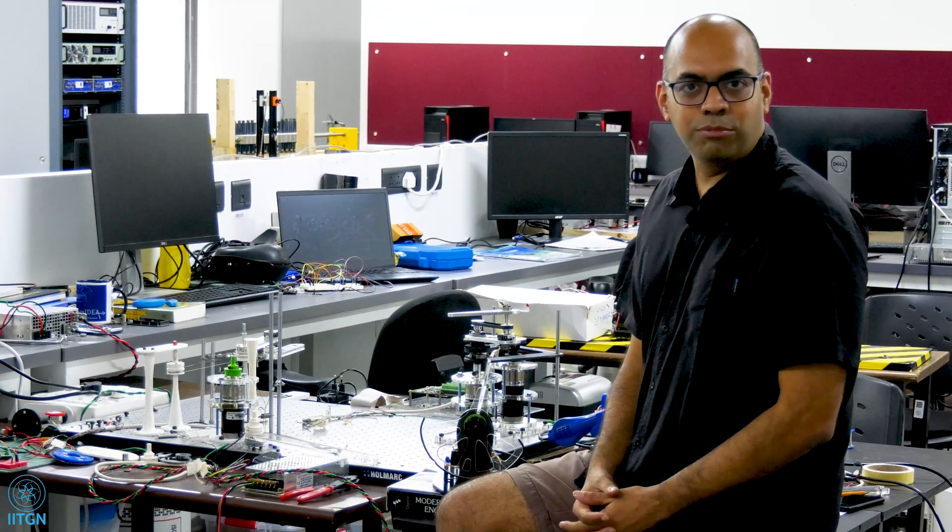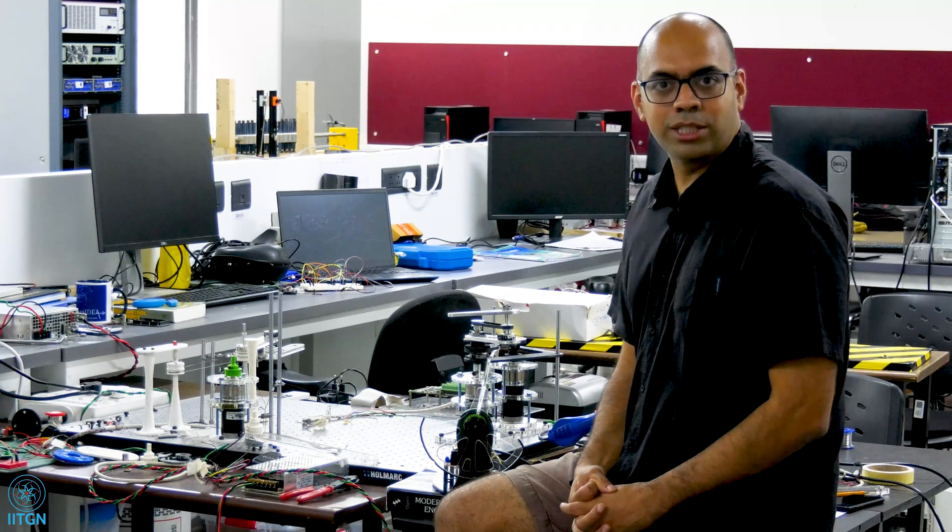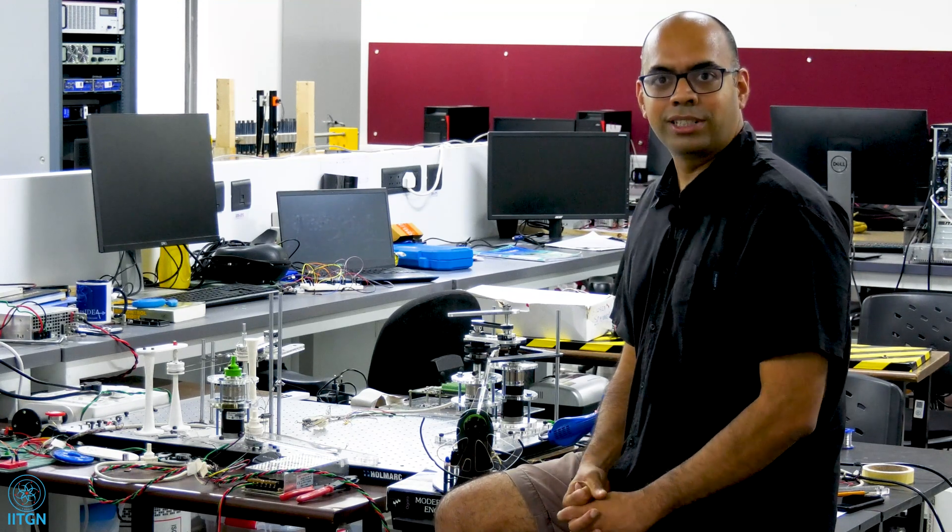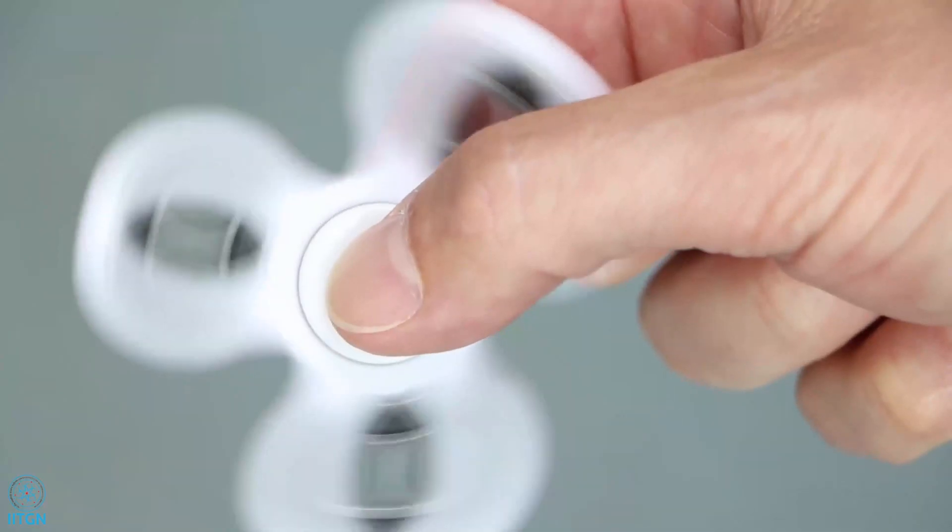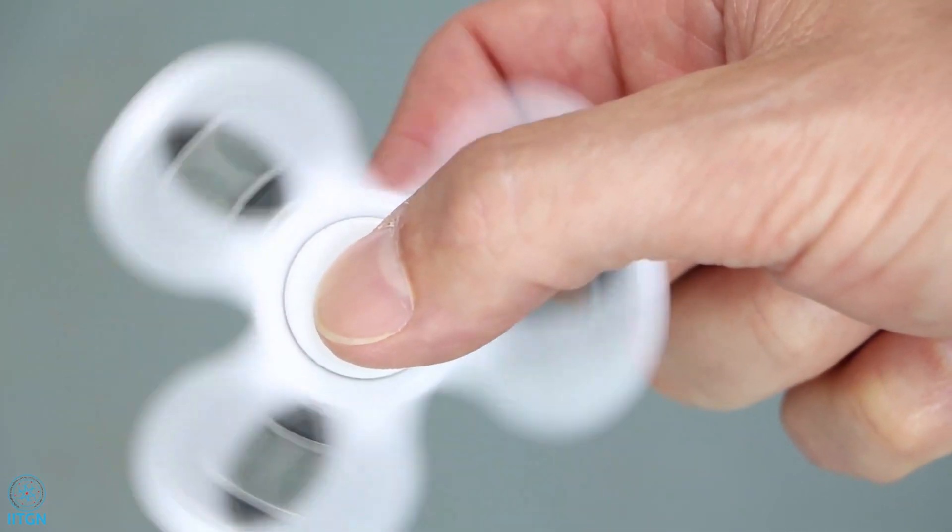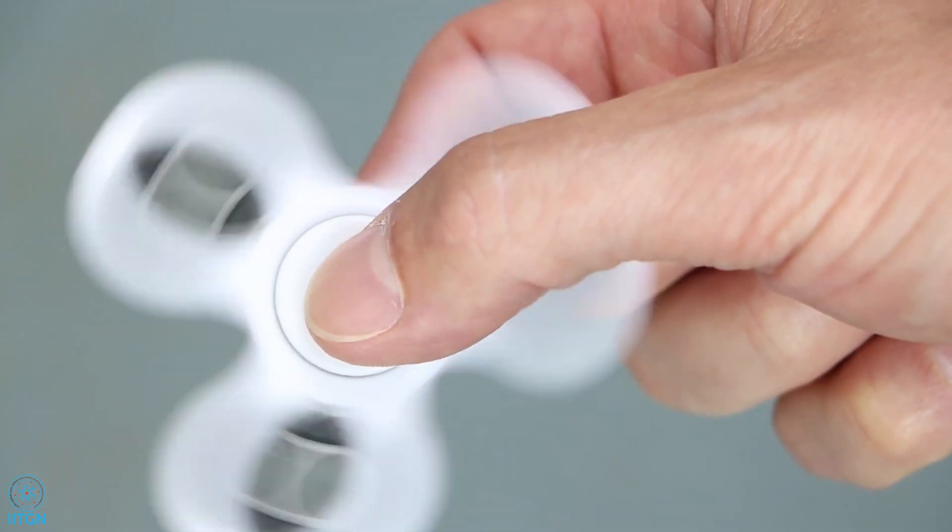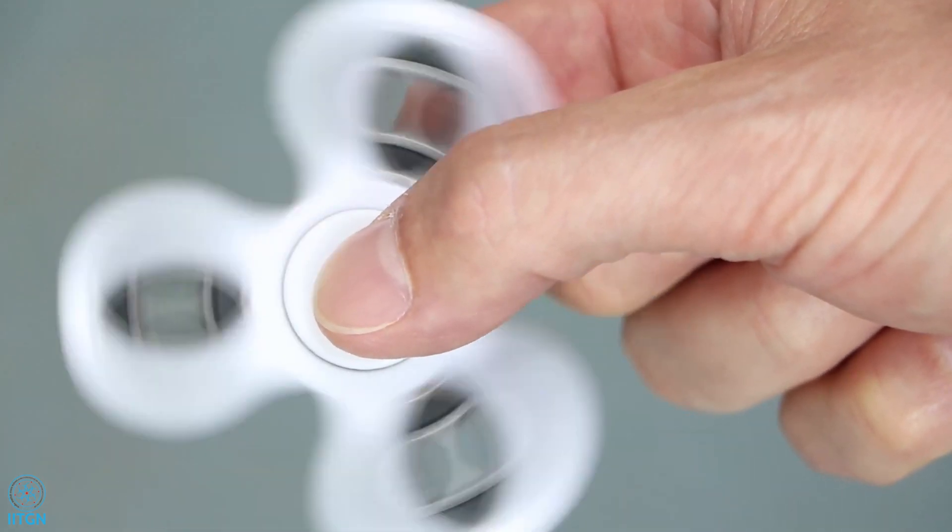Whether it be using the carom board to study impulse momentum, friction, or work energy, or using a fidget spinner to study the gyroscopic effect and how speed and orientation affect the gyroscopic action.